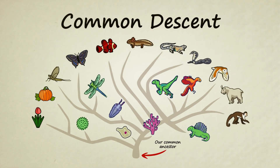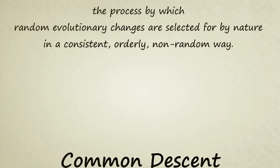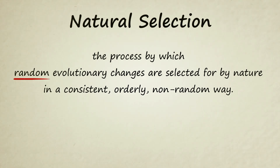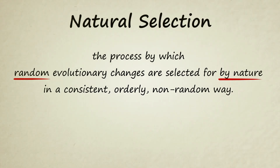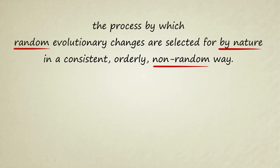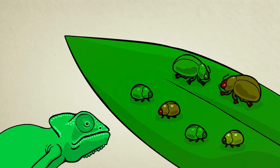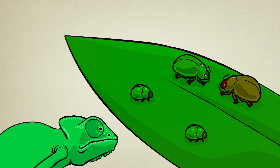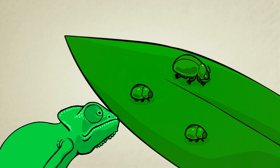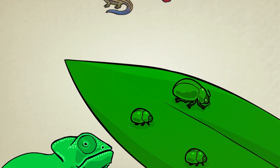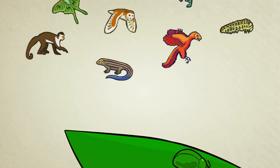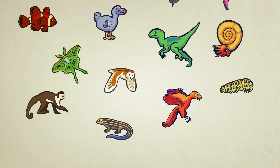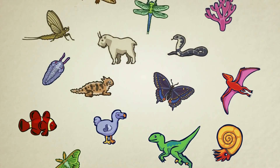So to sum things up, what exactly is natural selection? Natural selection is the process by which random evolutionary changes are selected for by nature in a consistent, orderly, non-random way. Through the process of descent with modification, new traits are randomly produced. Nature then carefully decides which of those new traits to keep. Positive changes add up over multiple generations; negative traits are quickly discarded. Through this simple, ongoing process, nature — even though it does not have a thinking mind — is capable of producing incredibly complex and beautiful creations.